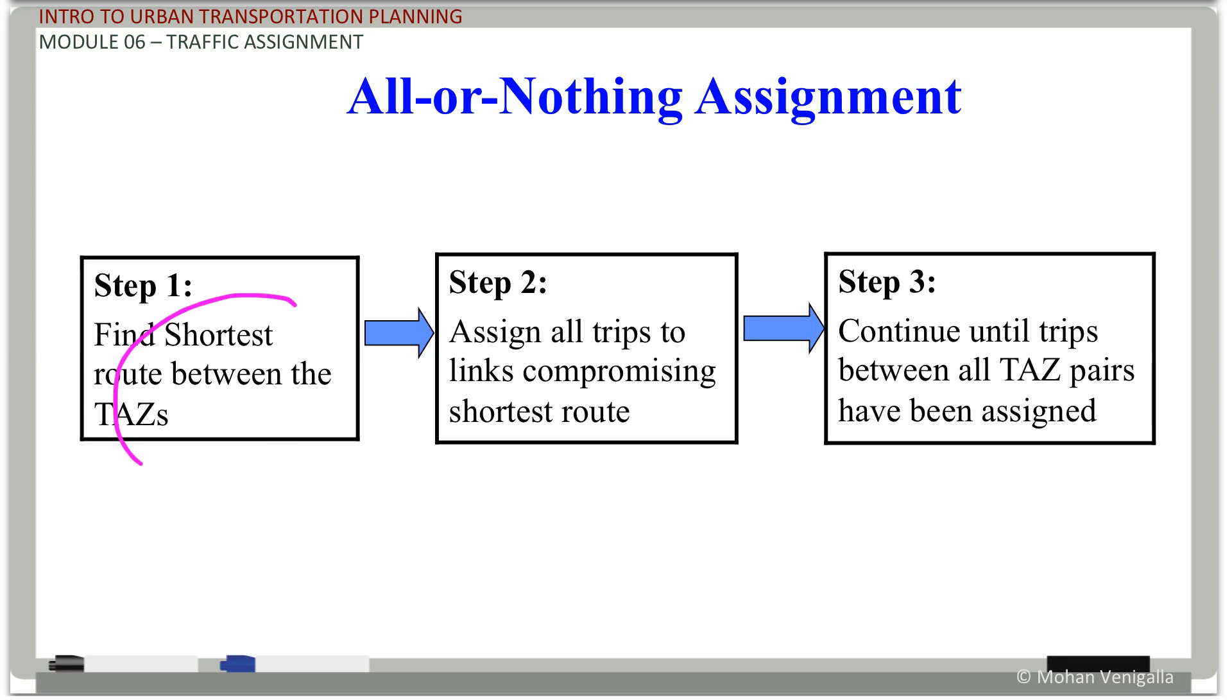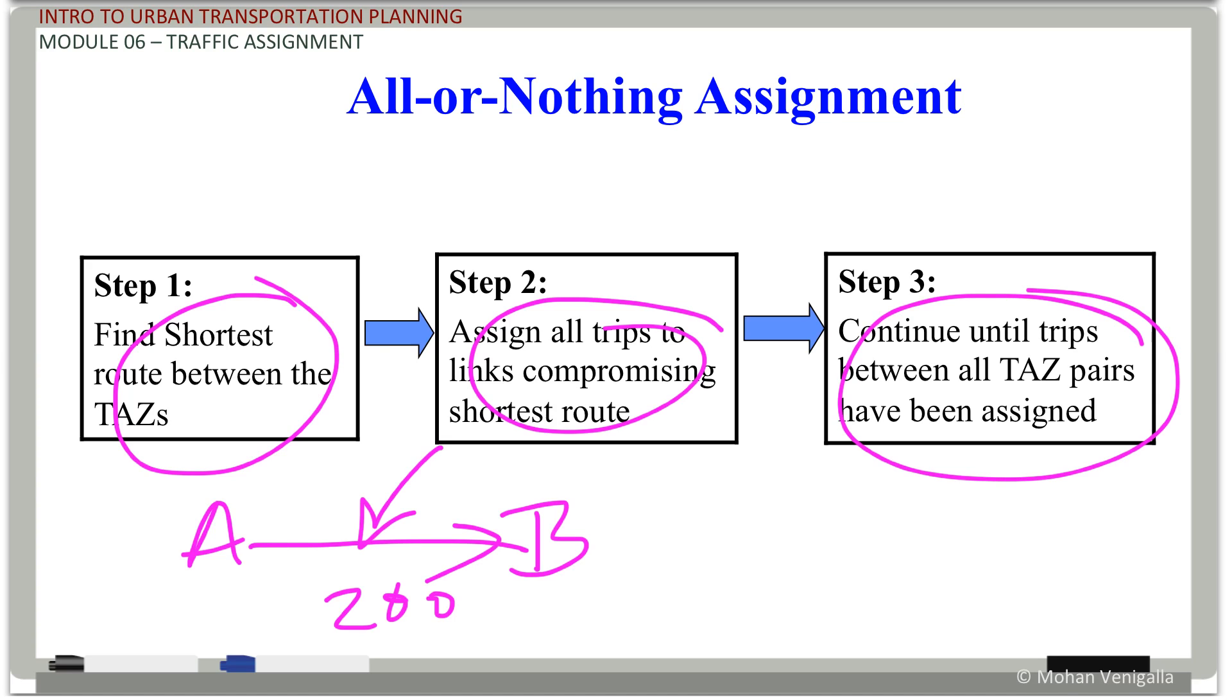So what you do? Find the shortest path between the TAZs. If you have zone A and zone B, find that path, assign all the trips to that path between A and B. If you have 200 trips, all 200 go there. Continue until all pairs of TAZ have been assigned.